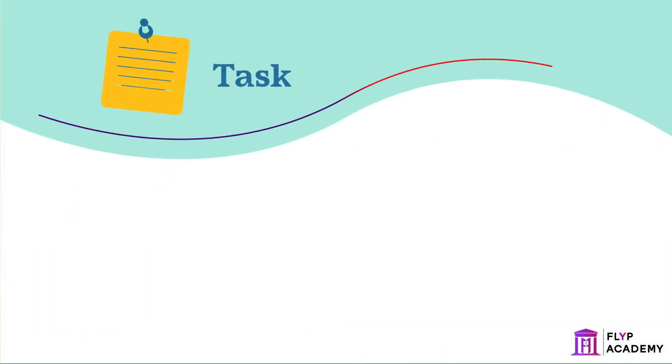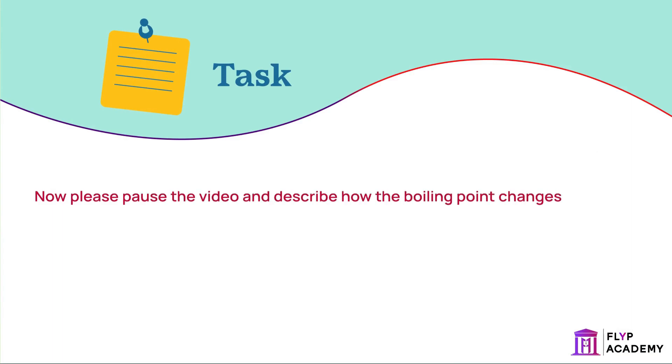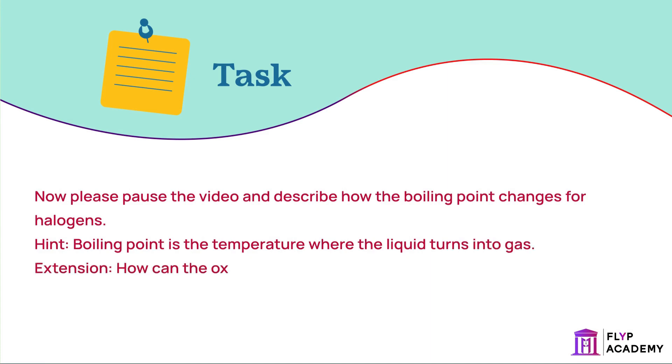Task: Now please pause the video and describe how the boiling point changes for halogens. Hint: Boiling point is the temperature where the liquid turns into gas. Extension: How can the oxidizing and reducing abilities of halogens be described?